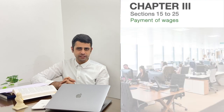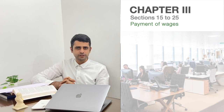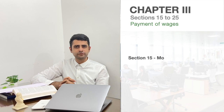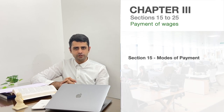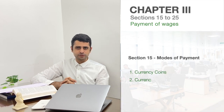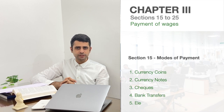Chapter 3, containing Sections 15 to 25 of the Code, deals with payment of wages. Section 15 of the Code prescribes five modes of payment of wages. An employer may pay his employee wages in the form of currency coins, currency notes, cheques, bank transfer, or electronic modes of transfer.